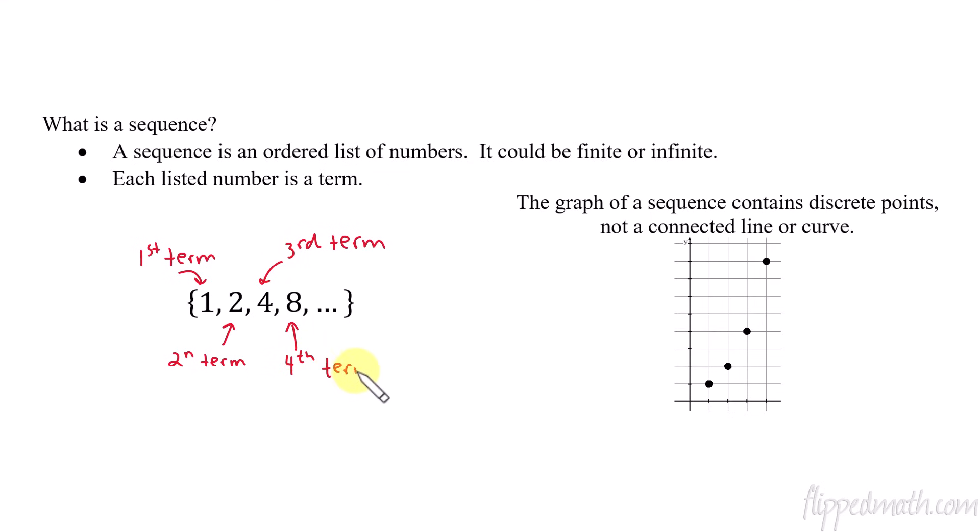Now this might seem obvious, but this is important that we recognize the number of the term, because that comes into play with some other things we're going to be doing. And then if you see dot, dot, dot, that just means it's infinite. And there's some type of pattern going on here in which that pattern continues forever.